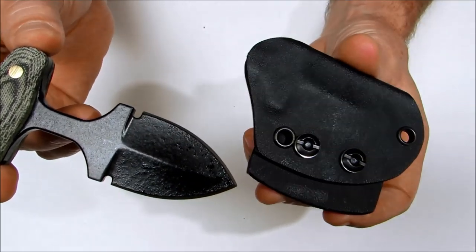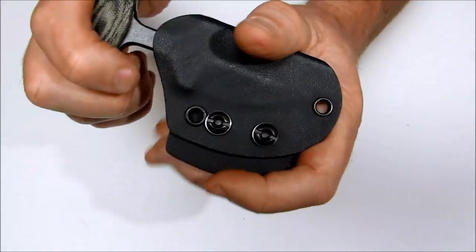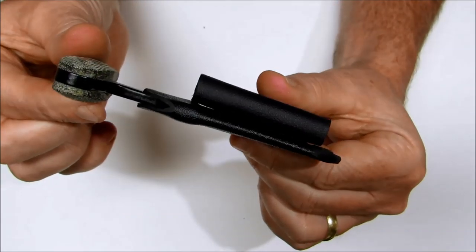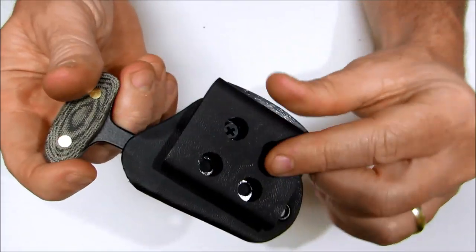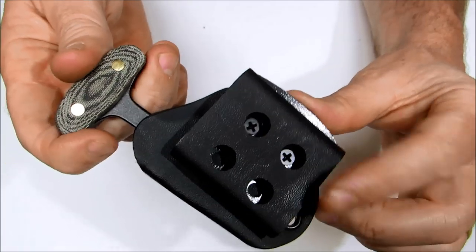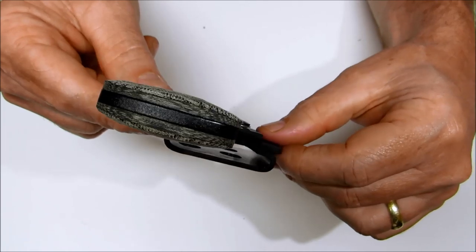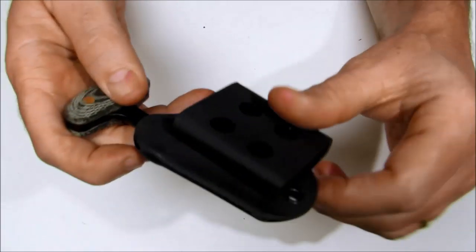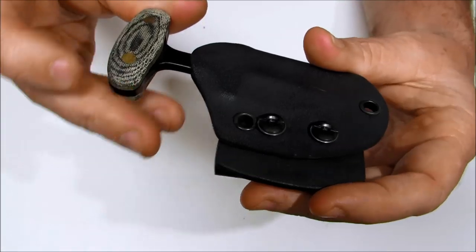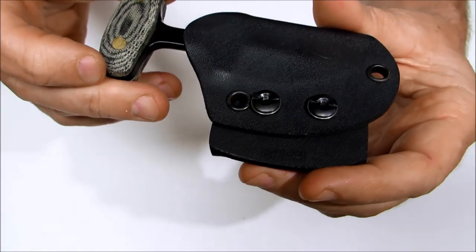It comes with this very nice form-fitted kydex sheath. Snaps right in there. You have an adjustable belt loop so you can wear these either vertically or horizontally on the belt. And you can see from one of the photos how it is worn horizontally. In the small of the back these things are very easy to conceal.